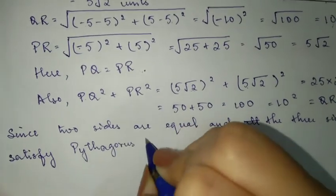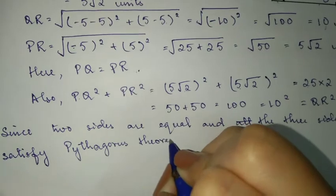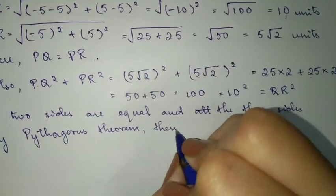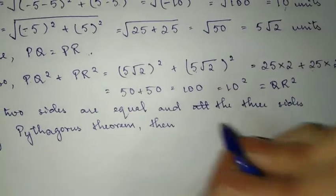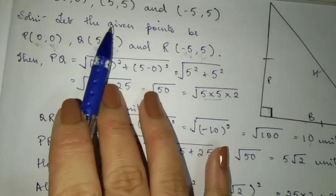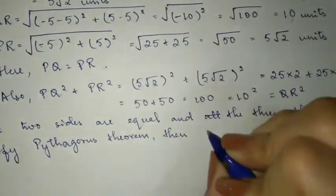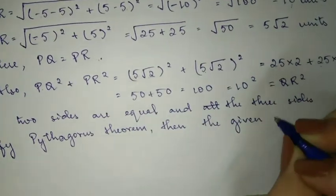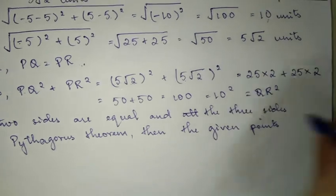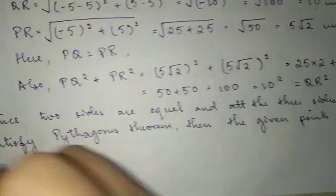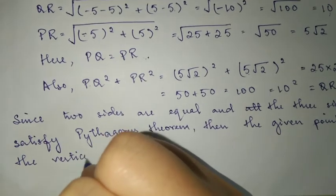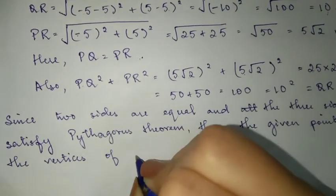Then the given points are the vertices of a right isosceles triangle. The given points are the vertices of a right angled isosceles triangle.